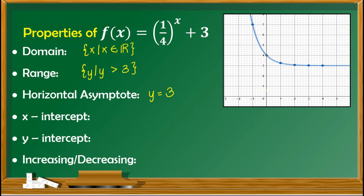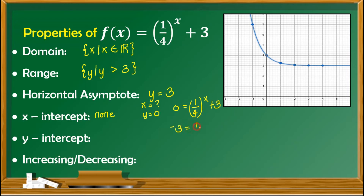For the horizontal asymptote, it is y equals h, so we have y equals 3. For the x-intercept, looking at the graph, the graph did not pass through the x-axis, therefore the x-intercept is none. Showing it algebraically: set f of x to 0, giving 0 equals 1 fourth raised to x plus 3. Isolating the exponential form gives negative 3 equals 1 fourth raised to x. Since we would have a negative base, we cannot equate them, confirming the x-intercept is none.